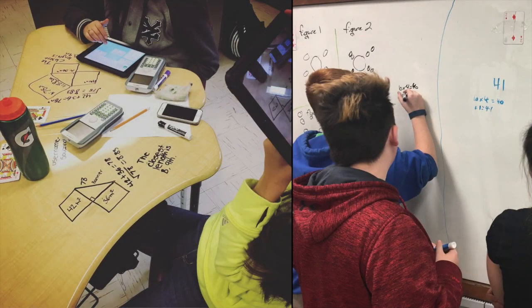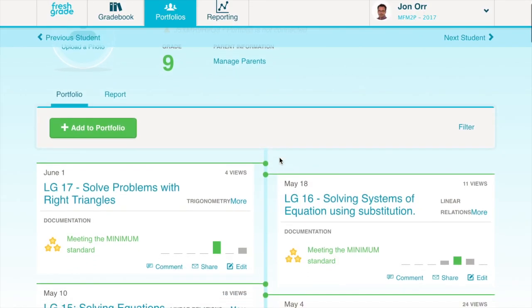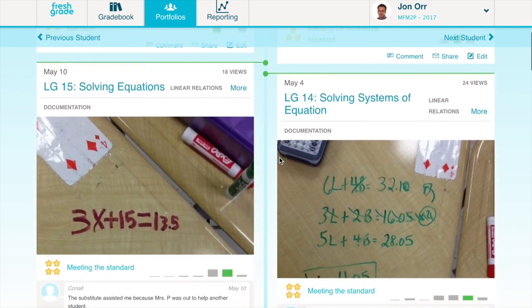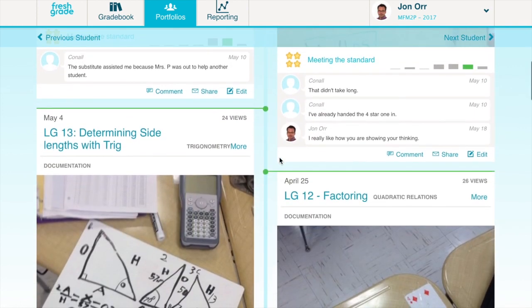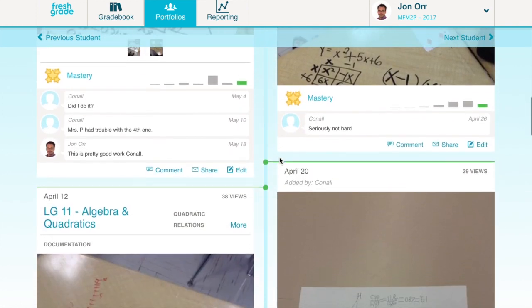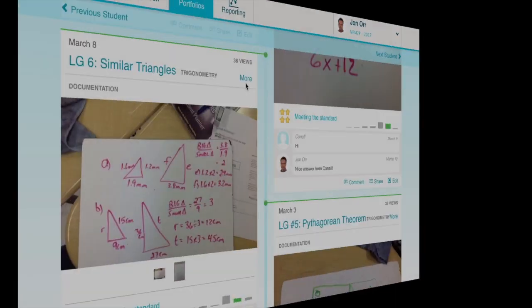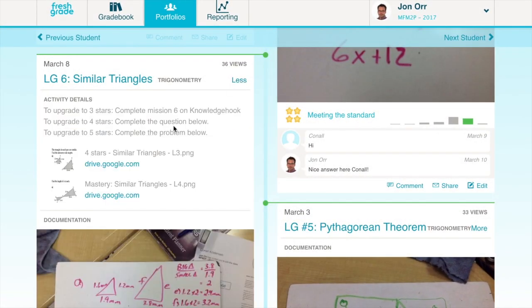One day each week, along with his classmates, Connell logs into his FreshGrade account, and waiting for him there is a list of current learning goals. Each learning goal shows not only his current progress, but his past achievement on those skills. Connell scans through the learning goals and chooses one that he wishes to improve upon.